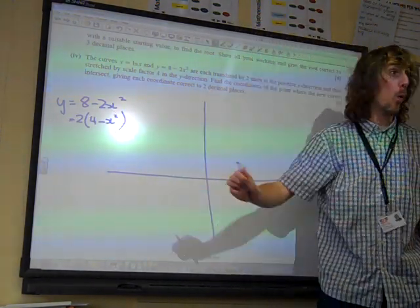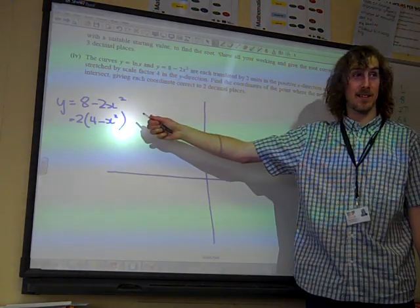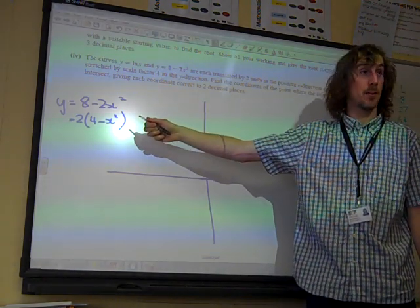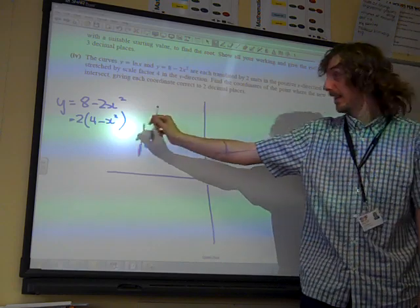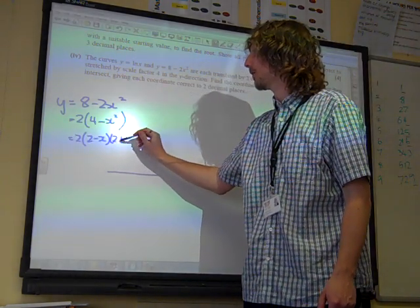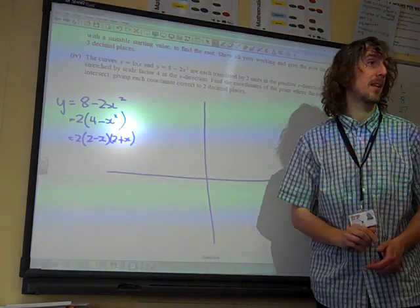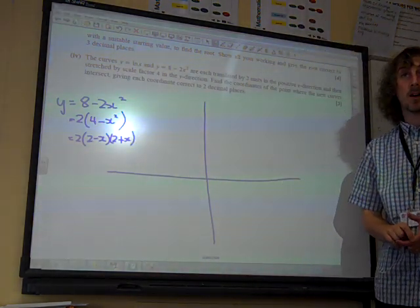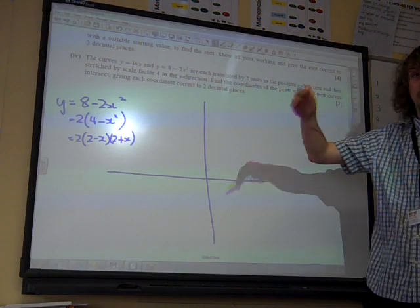Then you can think, oh, that's exciting. That's the difference of two squares right there. So that is 2 lots of 2 minus x times 2 plus x. That's quite nice. It was a negative coefficient of x squared.